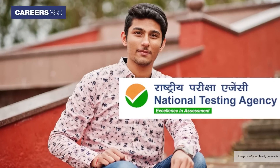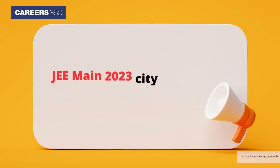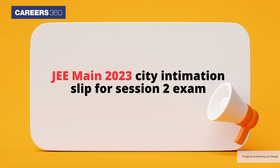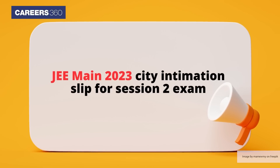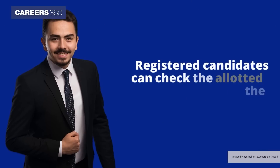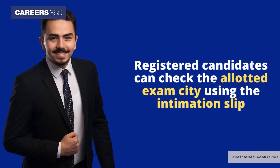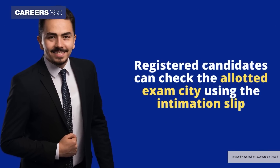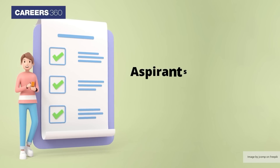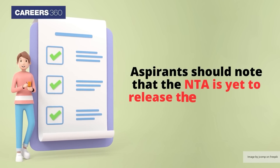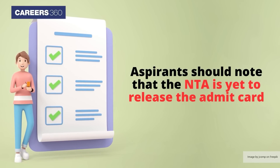The National Testing Agency has released the JEE Main 2023 City Intimation Slip for Session 2 Exam. Registered candidates can check the allotted exam city using the intimation slip. Aspirants should note that NTA is yet to release the Admit Card.